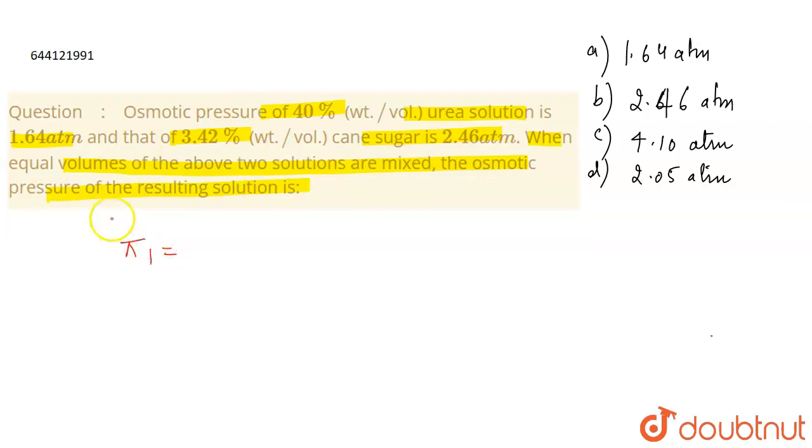The osmotic pressure of the first solution that is 40% urea is equal to 1.64 atm. Then osmotic pressure of the second solution is 2.46 atm and the second solution is 3.42% cane sugar.